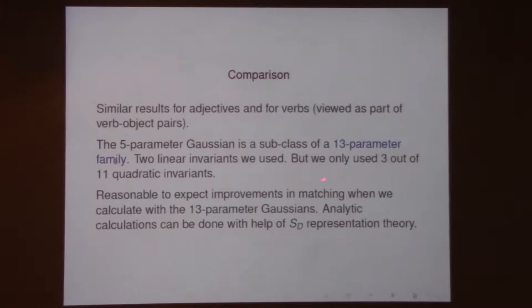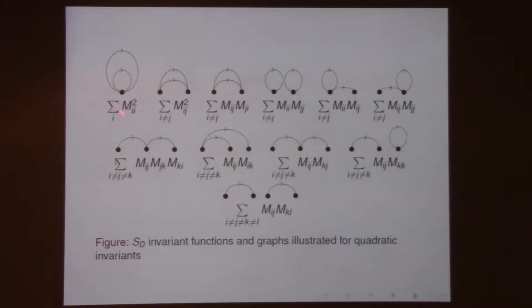The most general Gaussian is really a 13-parameter family. This motivates a deeper study. So what are these 13 parameters? There are two linear ones and in fact 11 quadratic invariants. For each of these invariants you can associate a graph — there's a connection between counting these invariants and counting directed graphs, where each M corresponds to one edge and nodes correspond to one index.